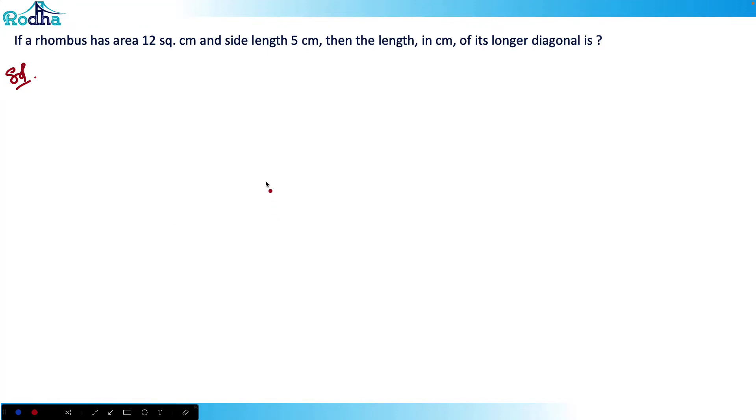Hi guys, let's look at this question. If a rhombus has area 12 square centimeters and side length 5 centimeters, then the length in centimeters of its longer diagonal is...